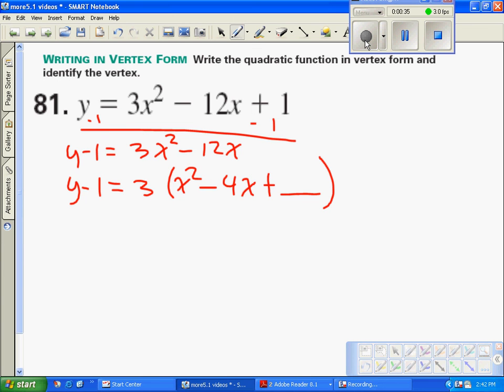Alright, completing the square is fairly easy. We're going to take the middle term, negative 4, take half of it and square it.